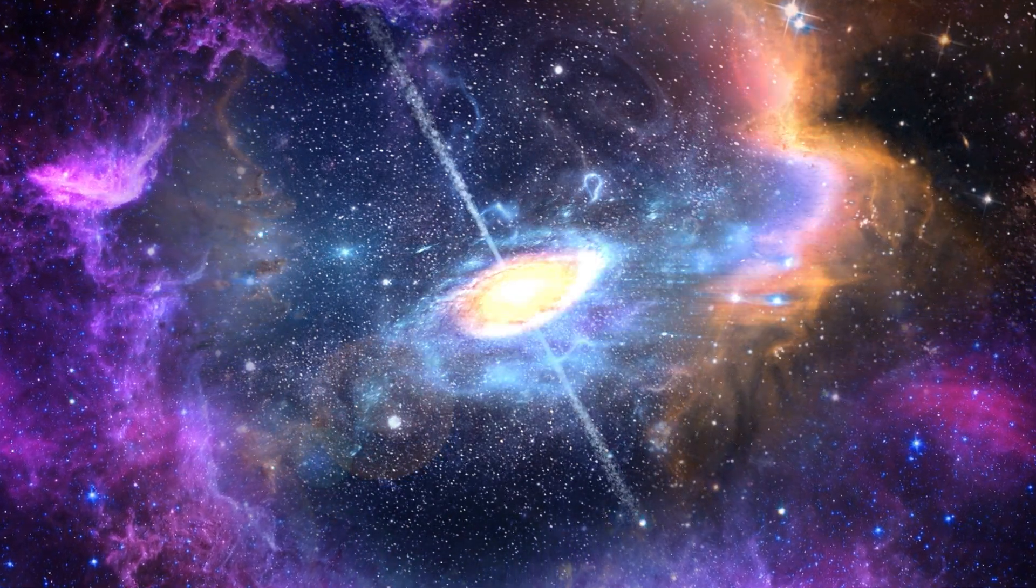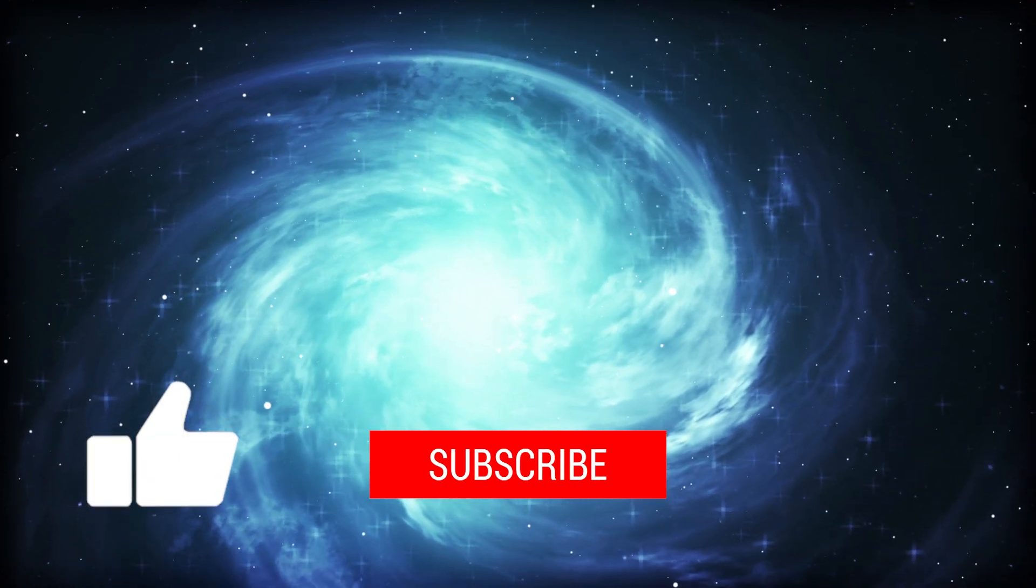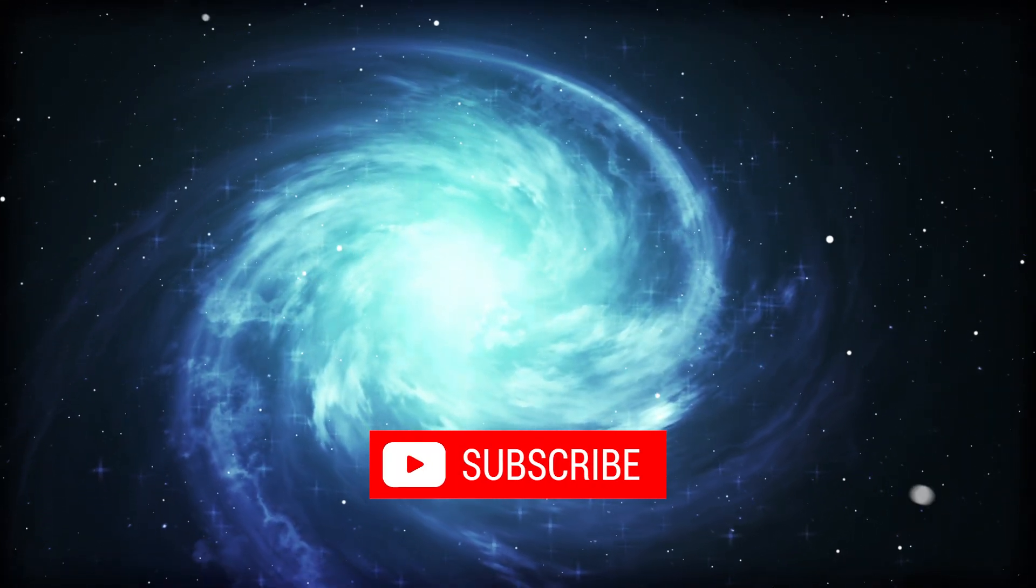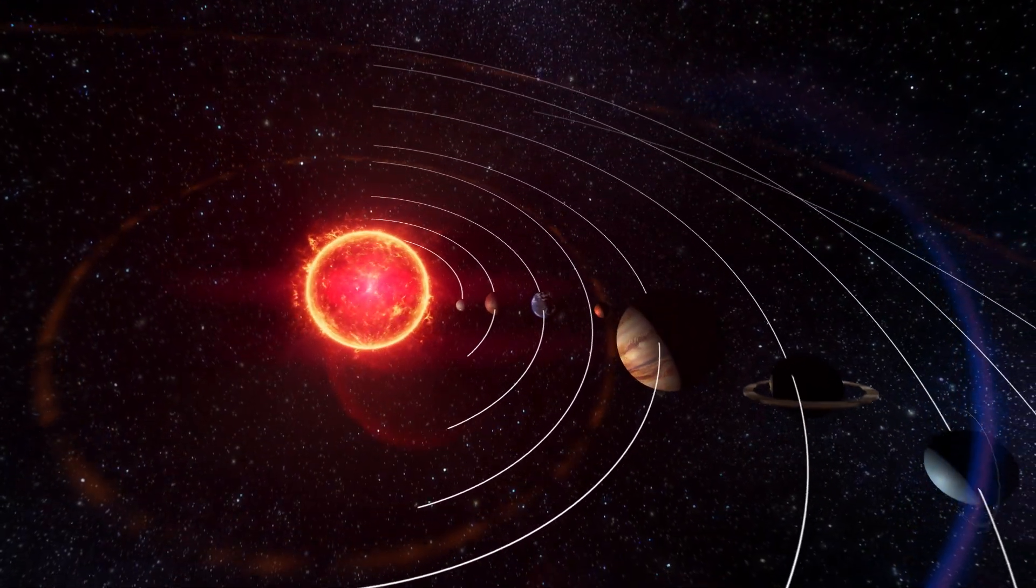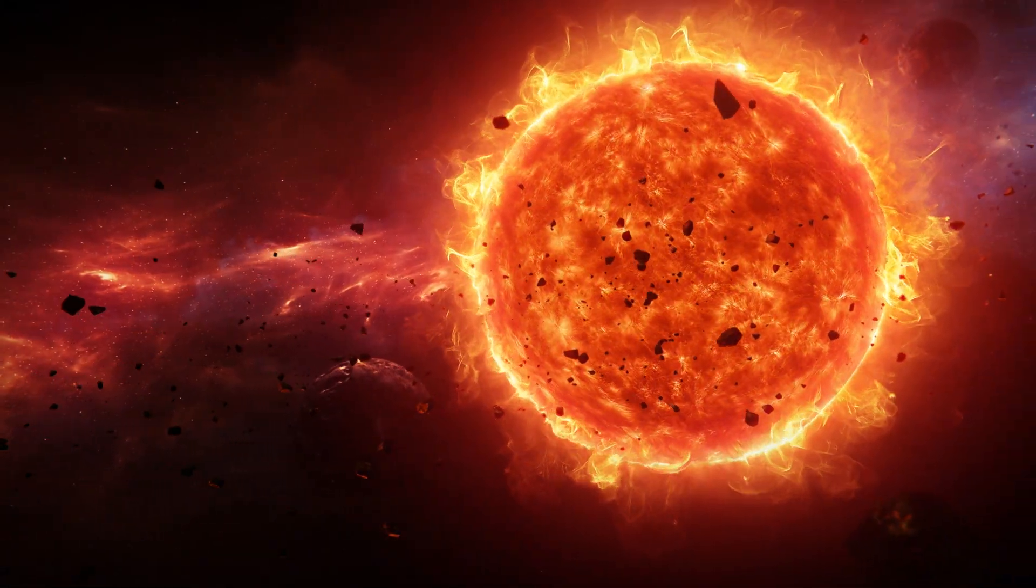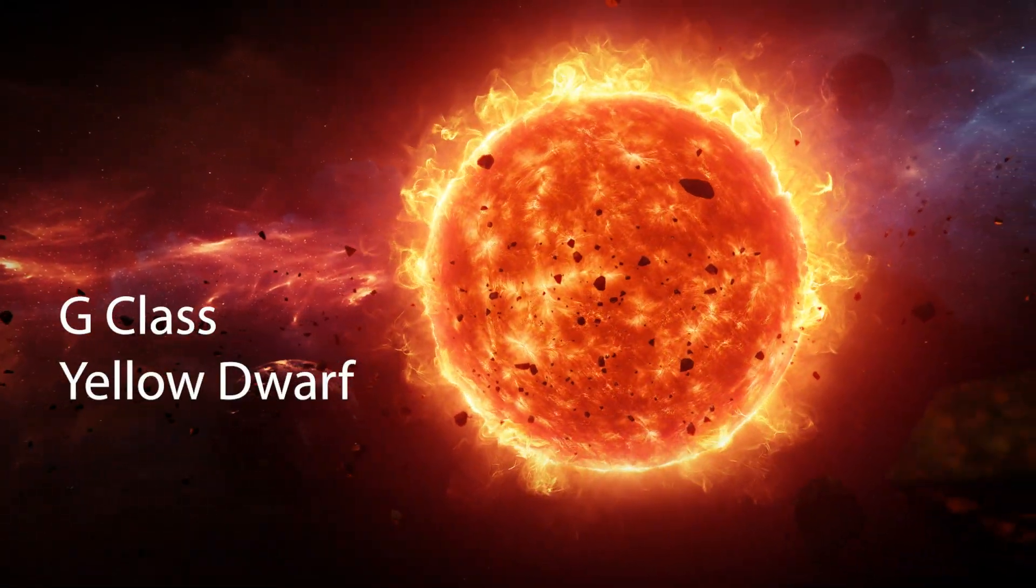If you enjoy this video and want to support the channel, tapping that like button and subscribing will go a long way. Let's first begin by looking at our own solar system and planet. Our star, the sun, is a G-type yellow dwarf star.